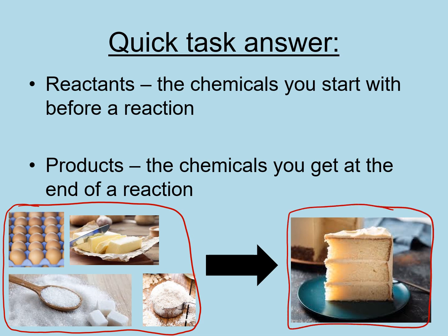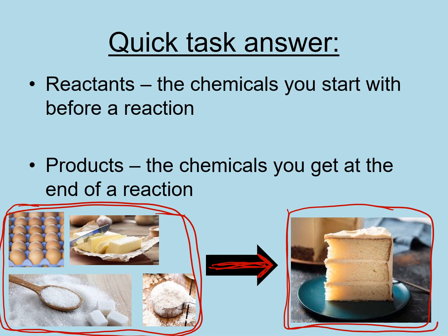The other part of the quick task was: what does the arrow show? Well, the arrow shows a chemical reaction taking place. So you take your reactants, you mix them up, you heat them in the oven — heating them in the oven is the chemical reaction taking place — and then at the end, your product would be the cake. If you don't remember that, make sure you go back to the reactivity topic and do some revision on that.